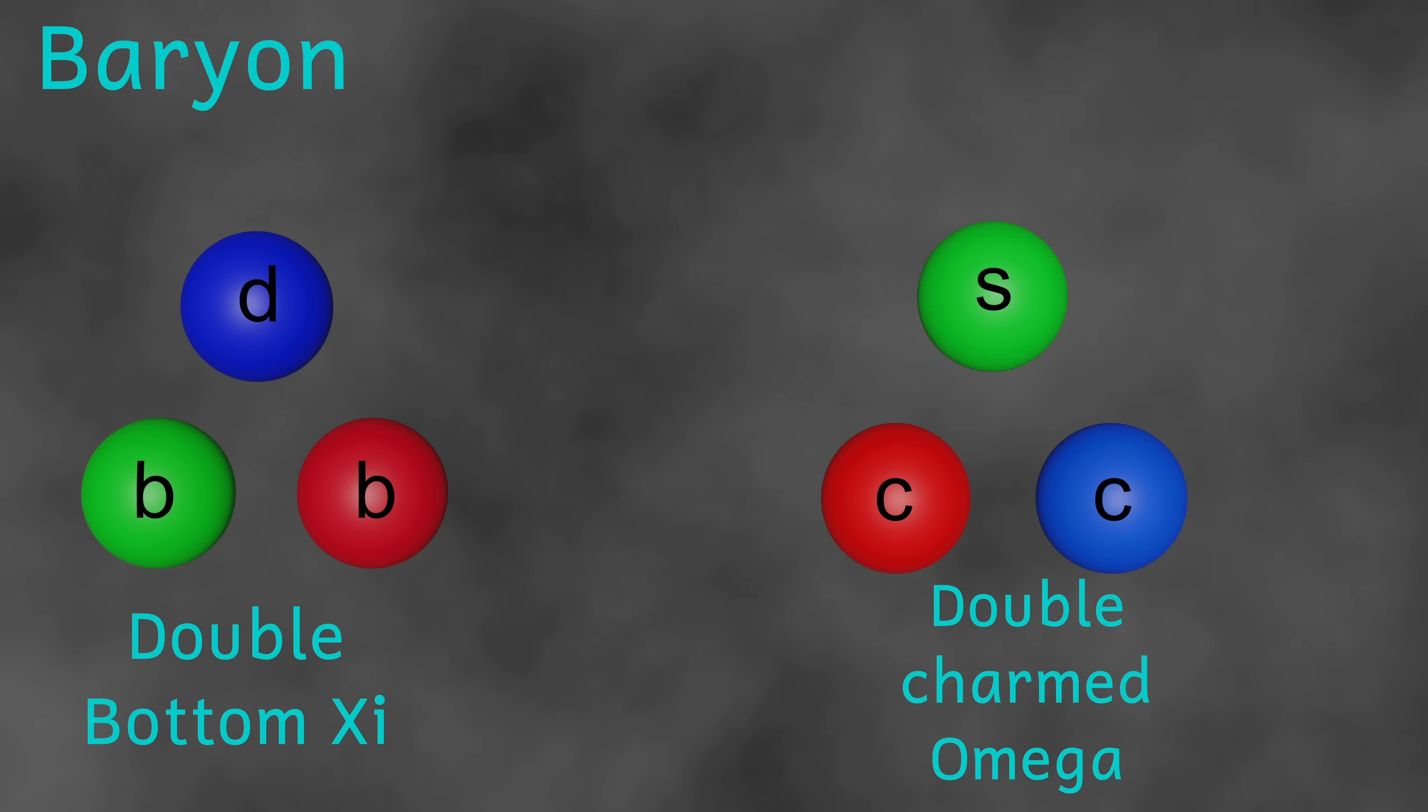Now, the color charge has to be neutral. And so because baryons are made from three quarks, there must be one red, one green, and one blue to give that color neutrality. The list of baryons is just huge. But most of them have really short lifetimes. Lifetimes which are tiny fractions of a second.